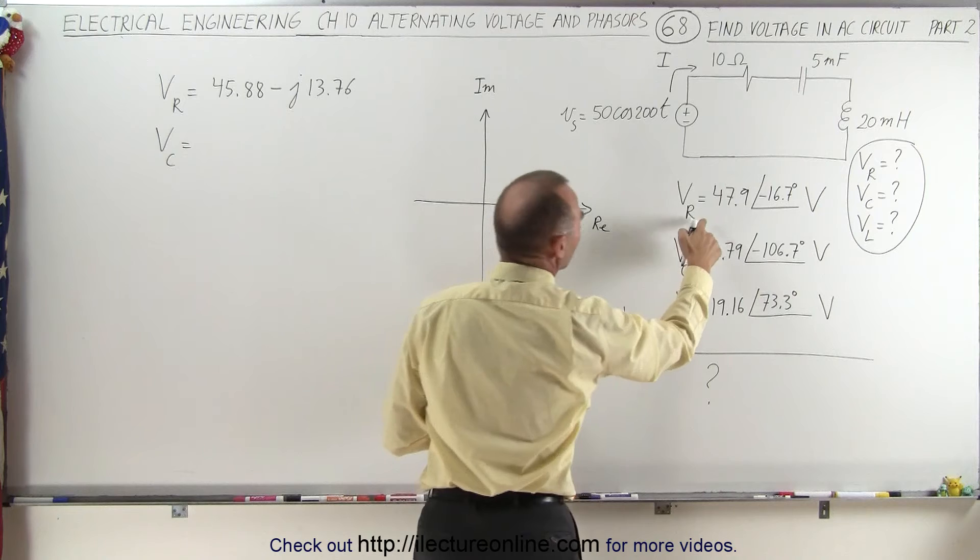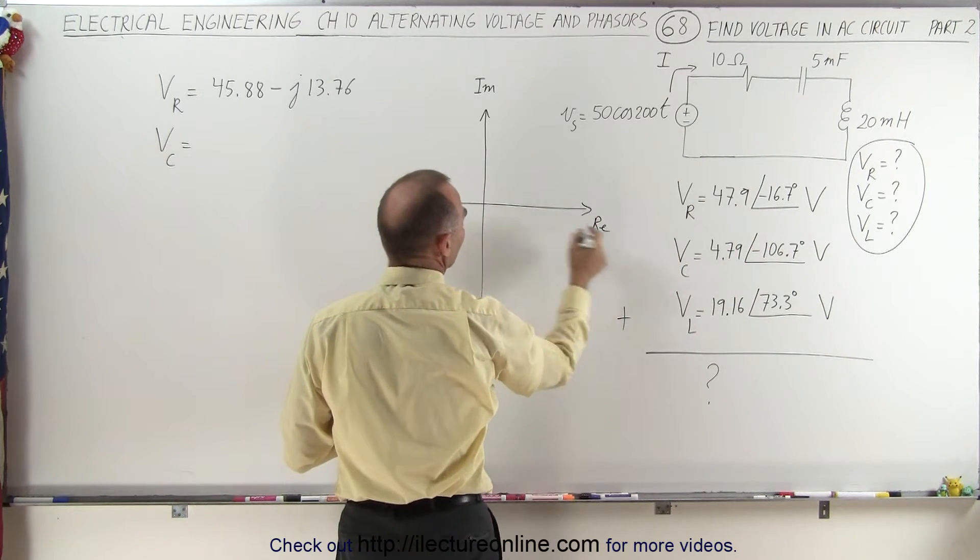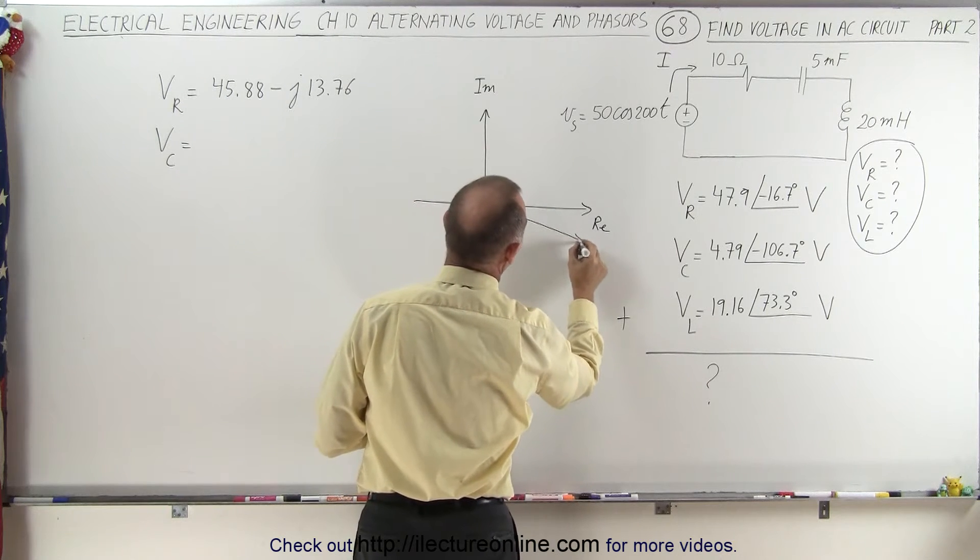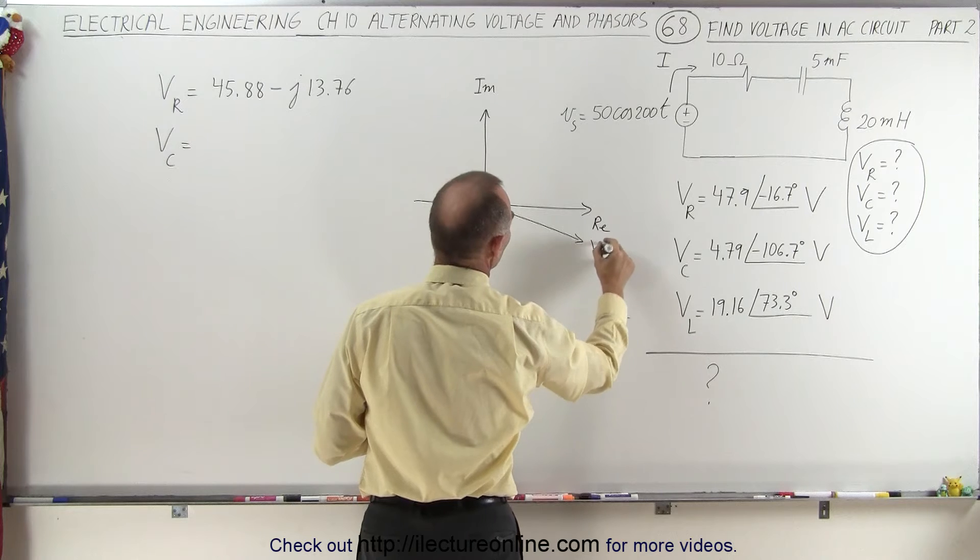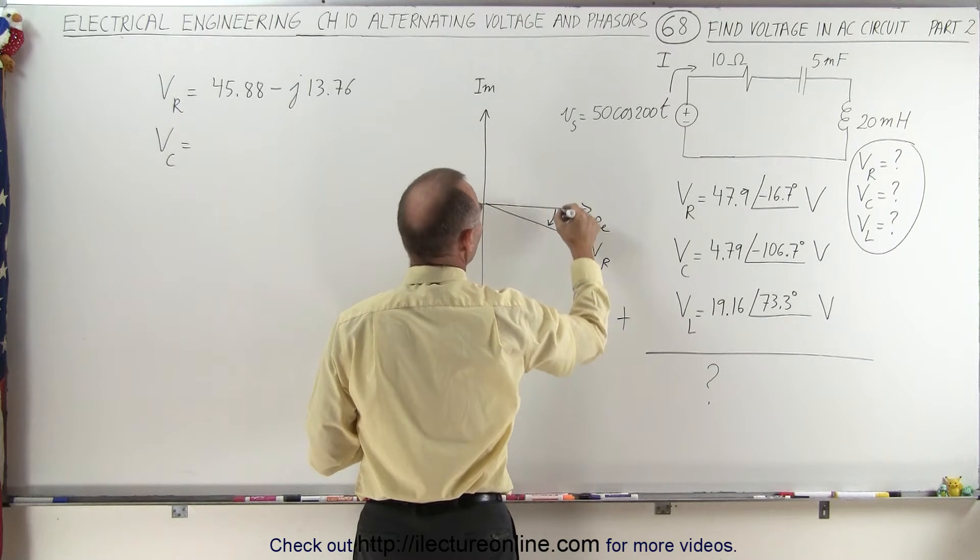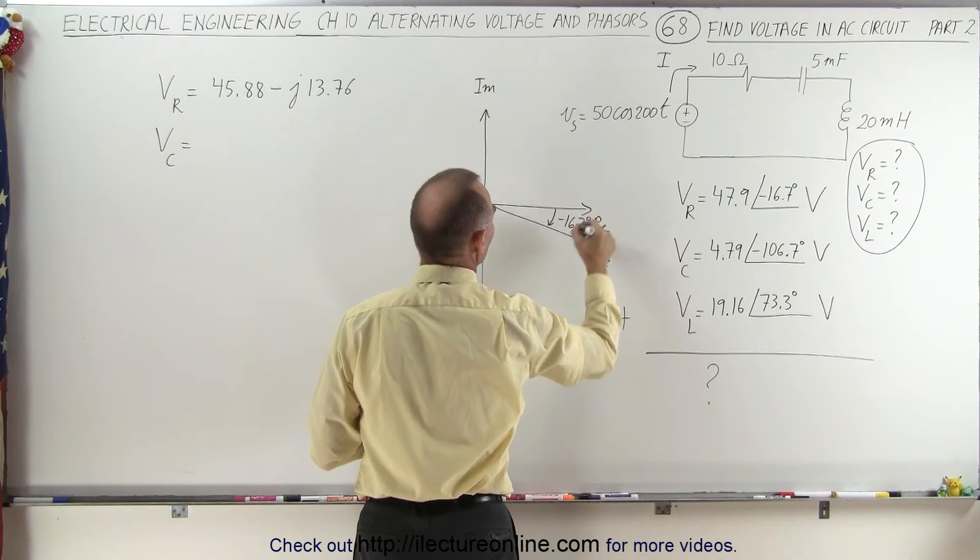The voltage across the resistor will have a phase angle of minus 16.7 degrees and the magnitude of 47.9. So that will look something like this. There we have the voltage across the resistor with a phase angle of negative 16.7 degrees.